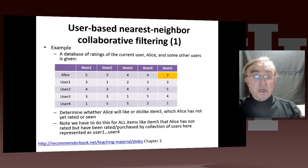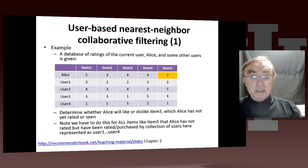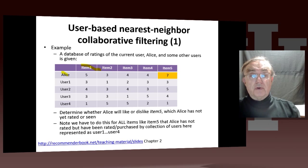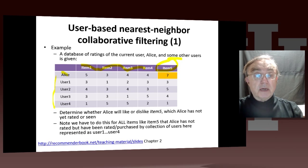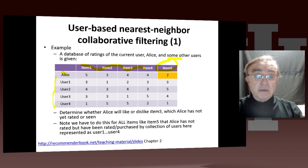Let's give an example from this recommender book — several of these slides come from this book. You have a matrix with a new user called Alice, who has ranked items one through four, and we want to make a decision about item five, which is not ranked. We have four other users; these small numbers are purely for illustration. Users one through four have purchased not only items one through four, but also item five, the one we're trying to predict.